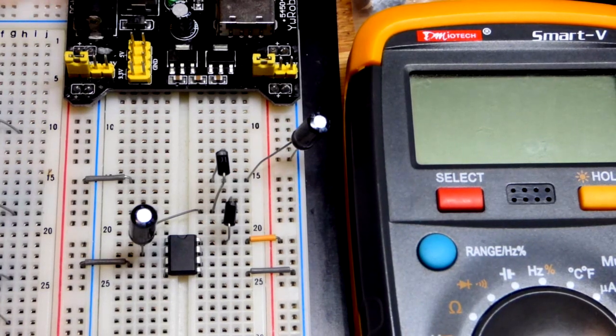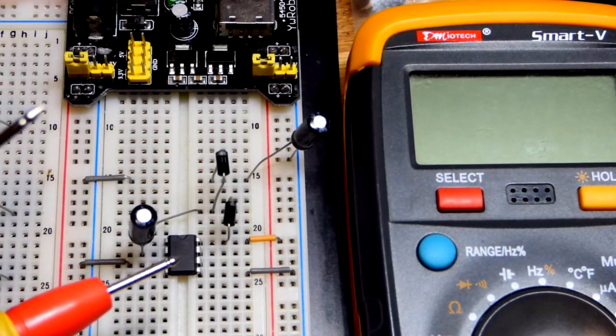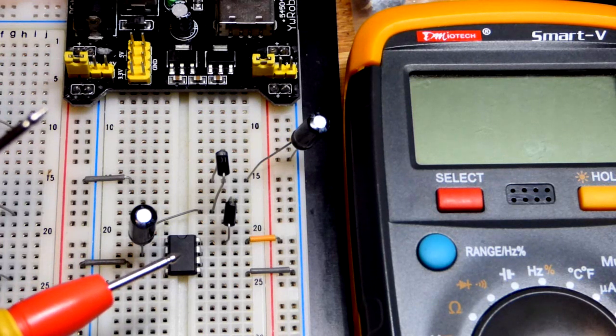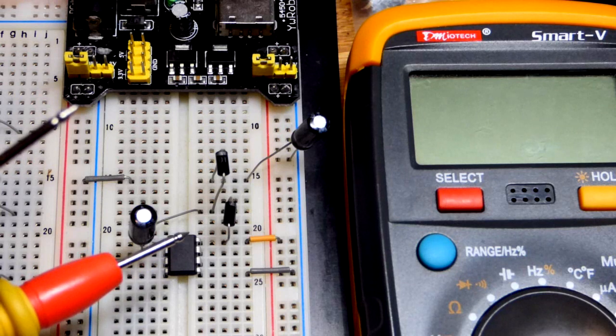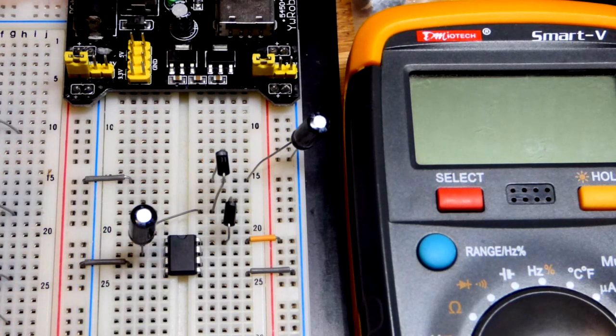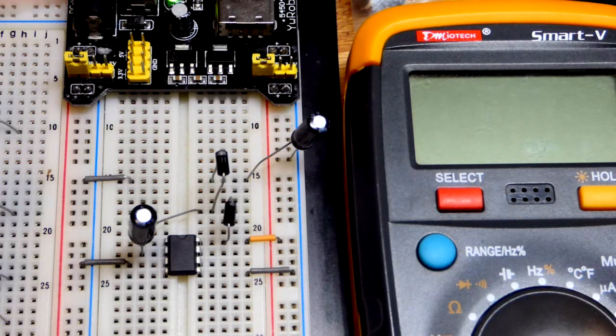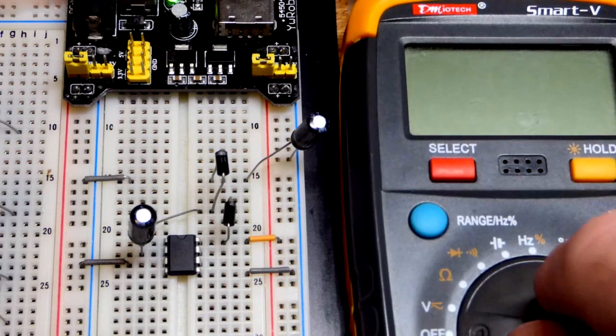In this video we come back to the 7660 integrated circuit. Depending on who made it, there may be letters in front of it. There's no letters for this particular one, so it may be a generic brand. I have it wired up right now as a voltage doubler.